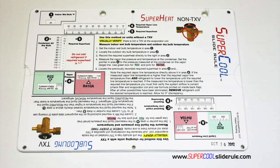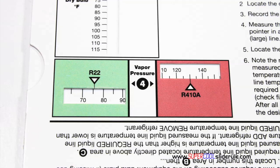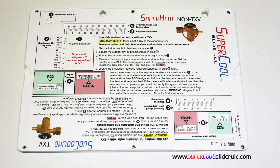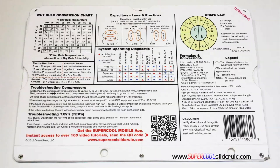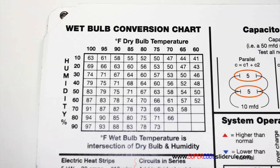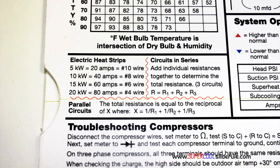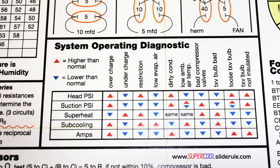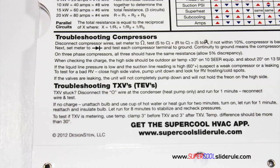This one tool will allow you to charge a system with R22 or R410A in either the superheat or subcooling method. The back cover contains required formulas, capacitor rules and practices, a wet bulb conversion chart, how to perform computations on series or parallel circuits, an electric heat strip guide, a complete system troubleshooting diagnostic chart, and how to troubleshoot compressors and TXV.